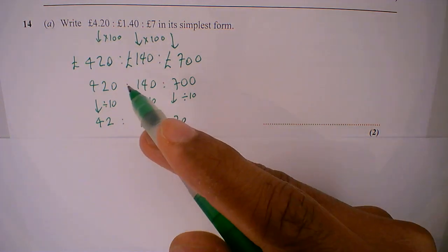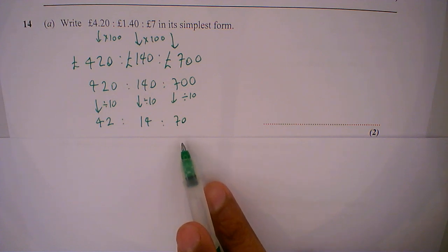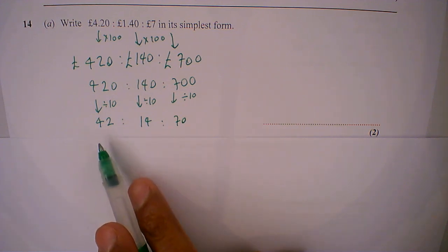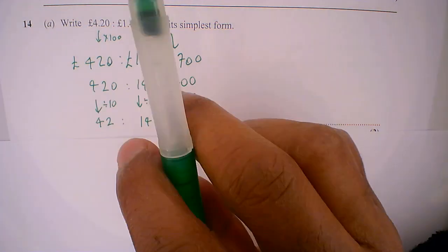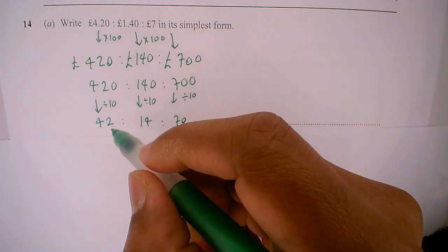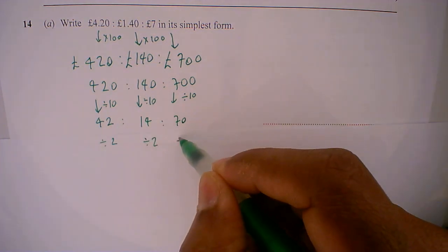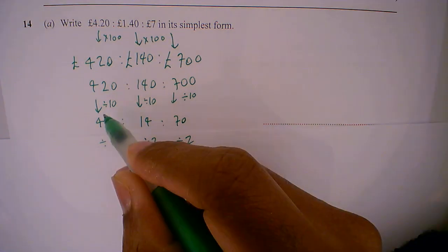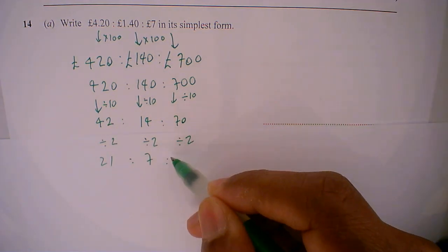Now I can spot that they're all even numbers, so I can now divide by another 2. So that gives me 21 to 7 to 35.